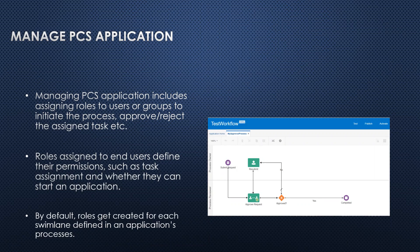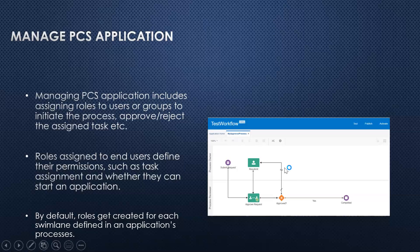As you see in this particular screen, we have a test workflow which we created in a previous video. Here you see there are two swim lanes: one is process owner and the second is process reviewer. Whenever we create any process, two swim lanes will be created with these two names and a corresponding role will get created. We can then assign users or groups to this particular role in order to initiate the process and take actions like approve or reject the tasks.